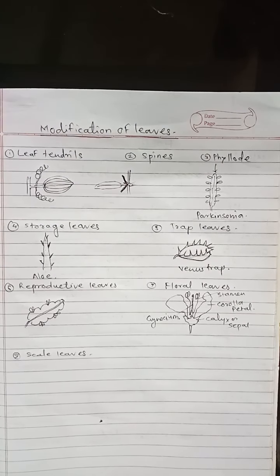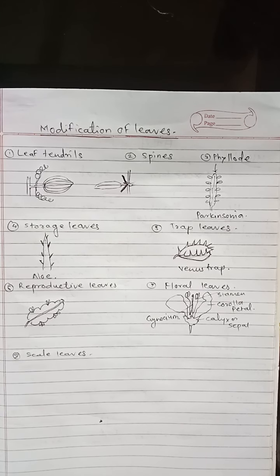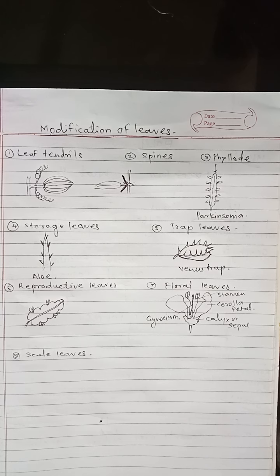Good morning students. Today we study about the last topic of unit 1, that is modification of leaves. The modification of leaves is of the following types: leaf tendrils, spines, phyllodes, leaf modification for storage, leaf modification for trapping insects, leaf modification for reproduction, floral leaves, and scale leaves.